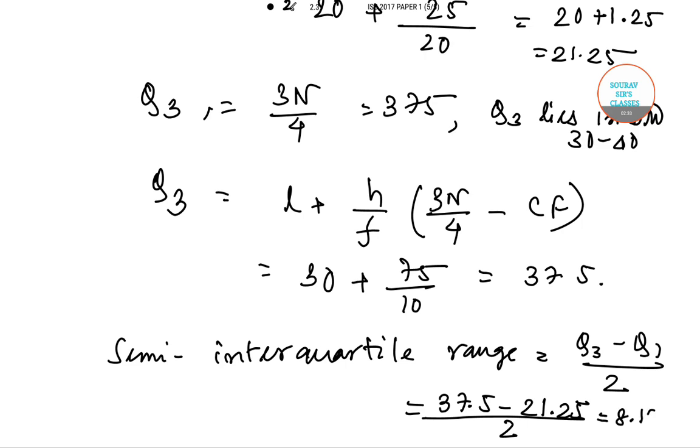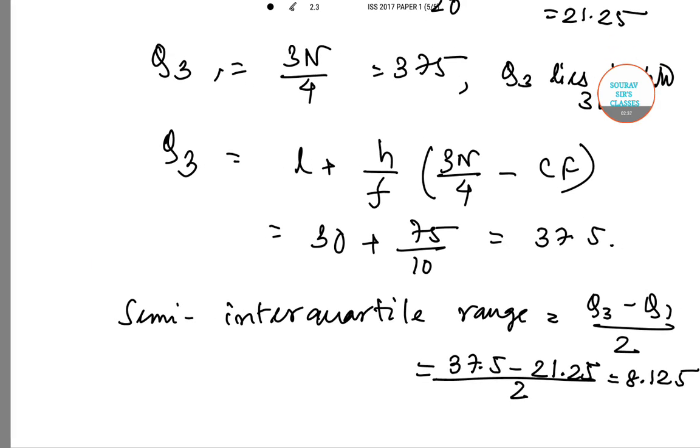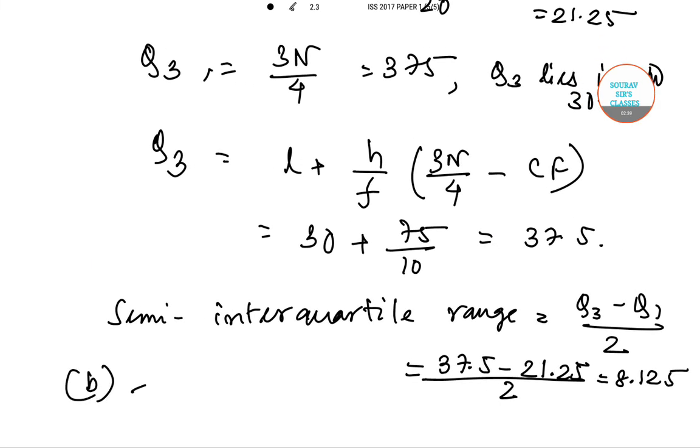That gives us 8.125, so option B is the correct answer for question number 22. Now following the same tabular question, we are asked to calculate the value of mode of frequency distribution in question number 23.